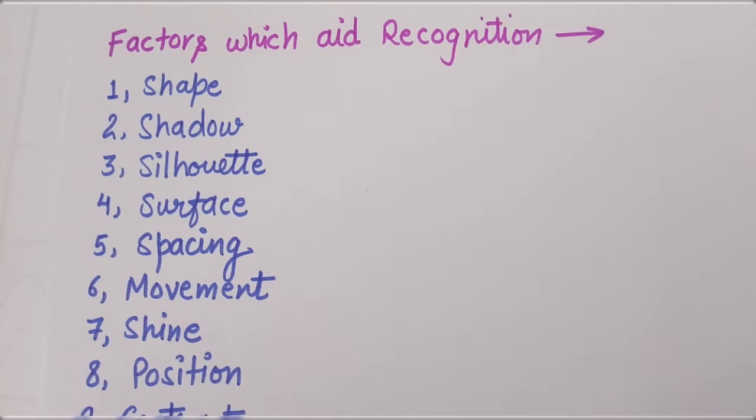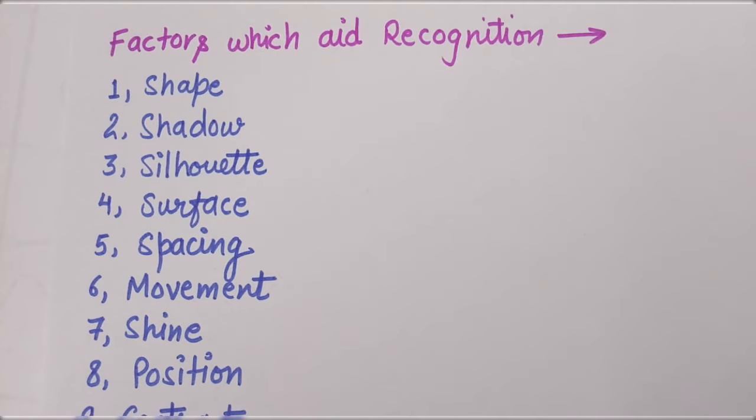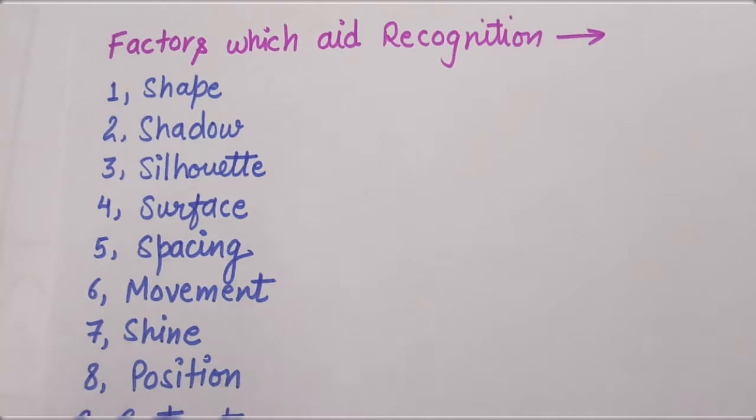Hello everyone! Today's question is: what are the factors that make things visible? You can call these factors which aid recognition. What is the factor in the ground and the field? We can recognize any other thing in the space.